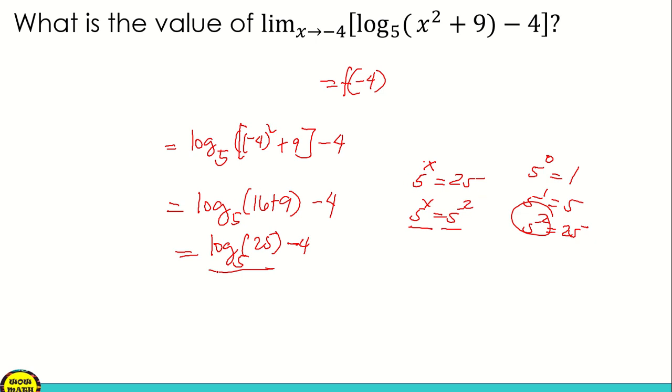Therefore, the value of logarithm of 25 with base 5 is positive 2. Positive 2 minus 4, so 2 minus 4 is negative 2. The answer is negative 2.